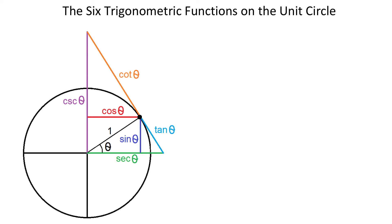In this video, I will explain the geometry behind all these six functions. Here we have a point on the unit circle with the coordinates x and y. If from this point we draw a perpendicular down to the x-axis, then we form a right triangle with the acute angle theta. In this triangle, the bottom side is x, the right side is y, and the hypotenuse is 1.